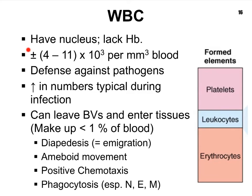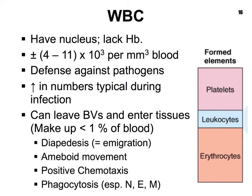The number of white blood cells is expressed in thousands, which is significantly less than the number of red blood cells. Looking at a chart that compares all formed elements — platelets, white blood cells, and red blood cells — red blood cells are the most abundant, followed by platelets, and then white blood cells at a much smaller amount, anywhere from 4,000 to 11,000 or 5,000 to 10,000. Those ranges are good to memorize.